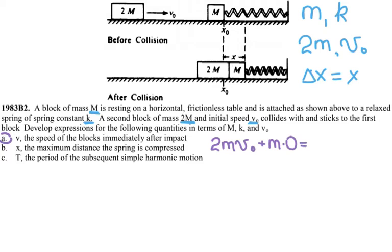And I'm looking for their new velocity. So it looks like their new velocity is going to be equal to two-thirds v₀, so two-thirds of the initial velocity of the 2M block.